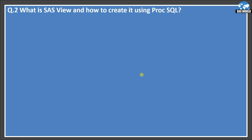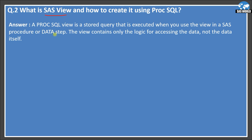The next question is: what is a SAS view and how do you create it using ProcSQL? A ProcSQL view is a stored query that is executed when you use the view in a SAS procedure or data step. The view contains only the logic for accessing the data, not the data itself. So a ProcSQL view stores the query, not the data. When you access the view, the underlying query will run and be executed.